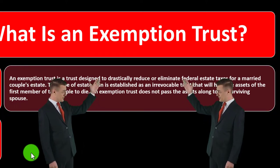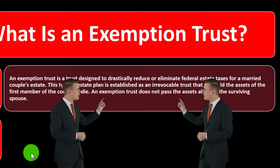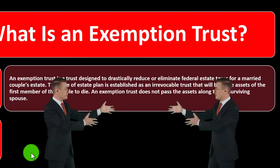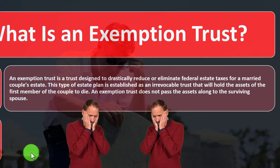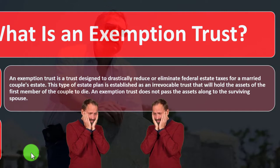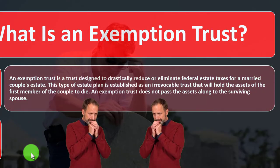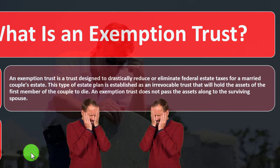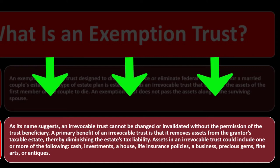The rationale: when the second spouse dies, if they have the rights to all the assets, those would be considered their estate and might be over the threshold for estate taxes. If instead when one person dies those assets go into a trust — a separate legal entity, similar in some ways to a corporation — then those assets are not in the name of the other spouse. When the second spouse dies, their estate hopefully won't include those first assets, which could lower the amount of estate taxes. As its name suggests, an irrevocable trust cannot be changed or invalidated without the permission of the trust beneficiary.